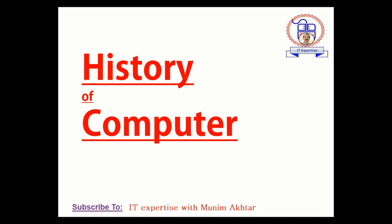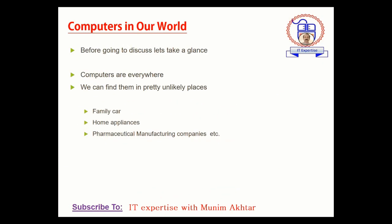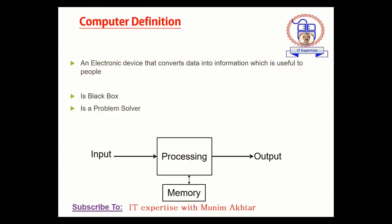I am Muni Mukhtar again with a new topic which is history of computers. Let's discuss the history of the computer one by one. Before going to discuss the computer, let's see what is a computer. A computer is an electronic machine used to process entered data, and after that you can easily manage or visualize your processed data on the computer screen. Nowadays computers are everywhere — in family cars, home appliances, pharmaceutical and manufacturing companies. In every aspect, computers play vital roles.